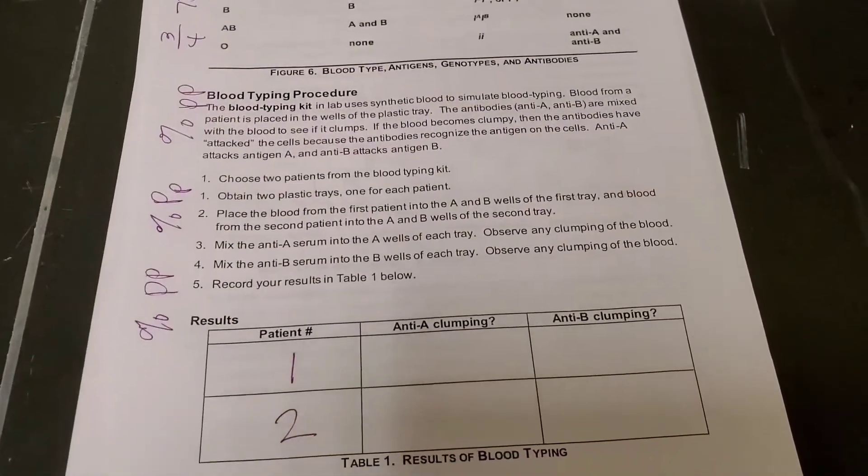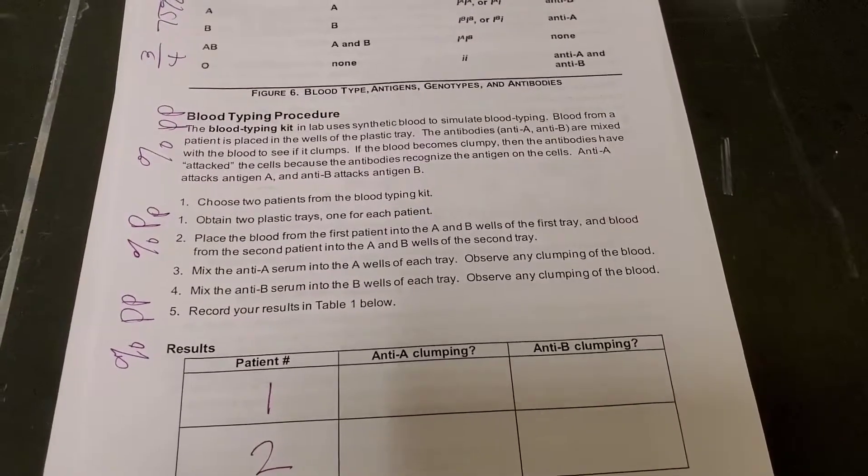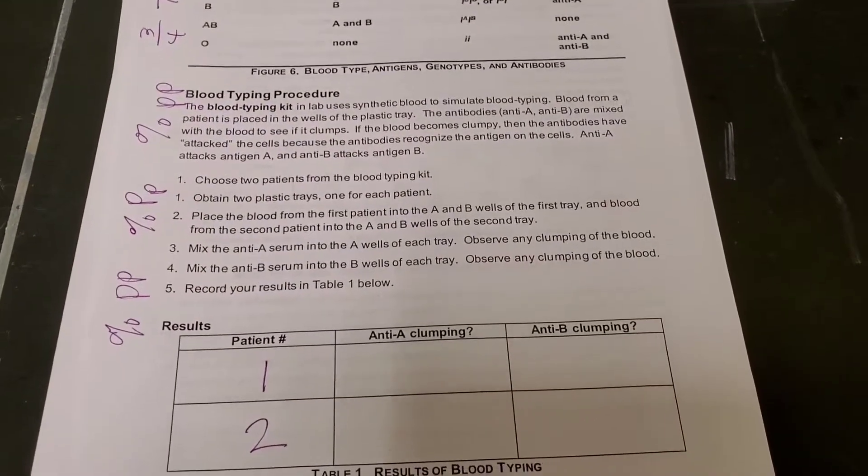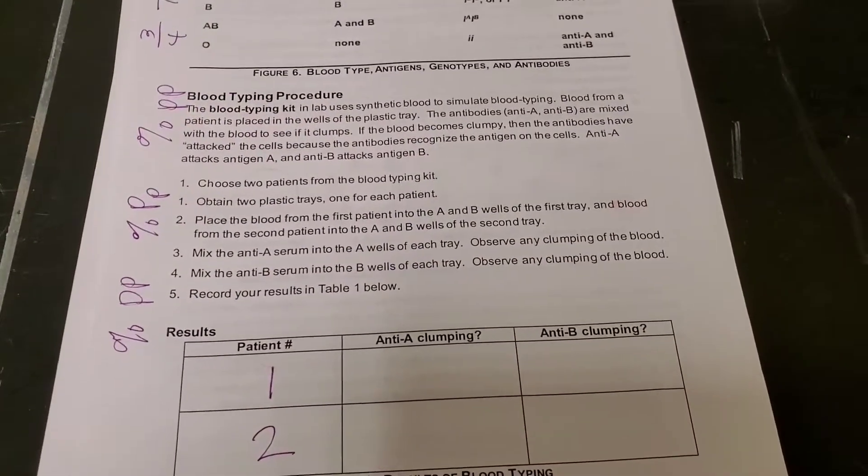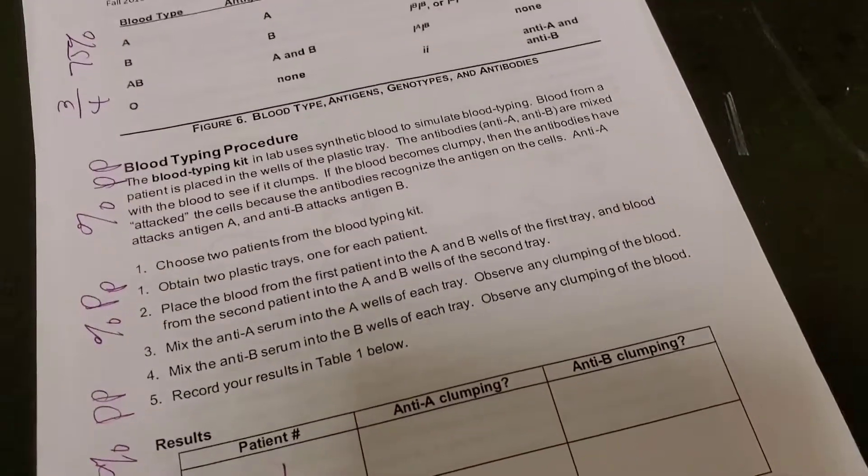Hello students, we're going to do this blood typing procedure for the lab, the chromosomal genetics lab, lab six. We're going to do the procedures right now together and then you can interpret the results for your lab report.